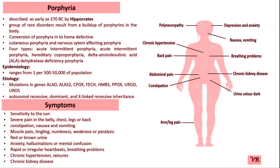Porphyria was first described by the French physician Armand Saussure in the 19th century. Saussure was focused on the clinical aspects of the disease and he made significant contributions to the early understanding of porphyria, particularly its symptoms and their association with the body's metabolic process. The biochemical basis of porphyria, involving abnormalities in the synthesis of heme, was elucidated later in the 20th century with advancement in biochemistry and genetics.